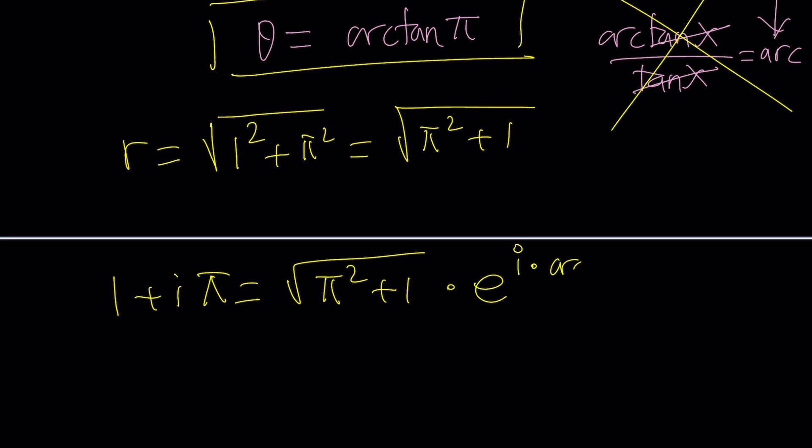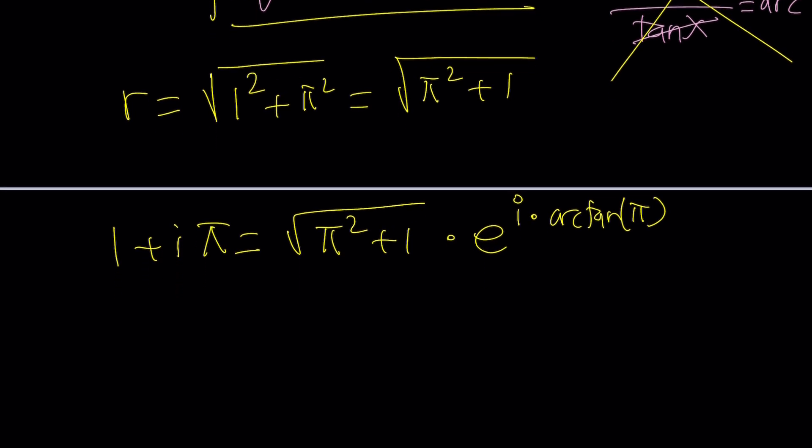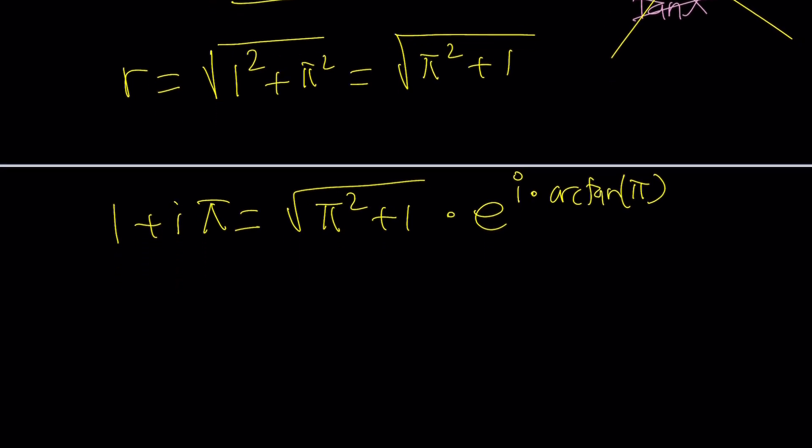That's R. So now we can write this number. 1 plus iπ is square root of π squared plus 1 times e to the power i times θ, which is arctan π. Again be careful here. It's not the same as tangent π. It's arc tangent of π. In other words, you're looking for an angle whose tangent is π. If I were to draw a right triangle, my angle would be here. This would be a π and this would be like 1. So we're looking for that particular angle.